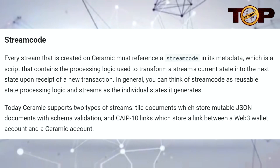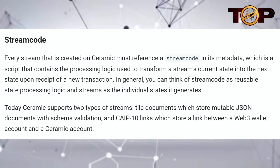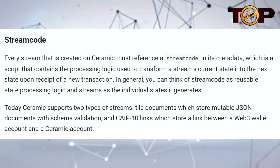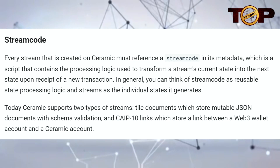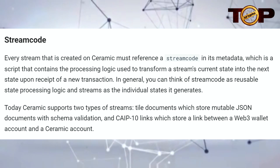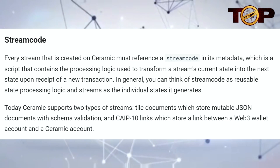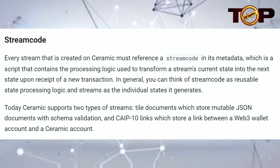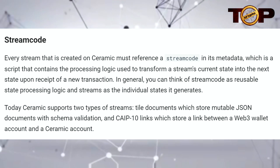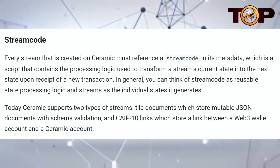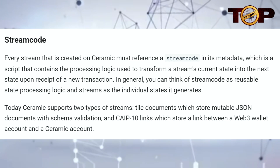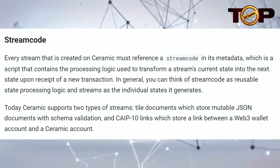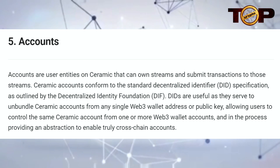Today Ceramic supports two types of streams: tile documents, which store mutable JSON documents with schema validation, and CAIP-10 links, which store a link between a web3 wallet account and a Ceramic account.